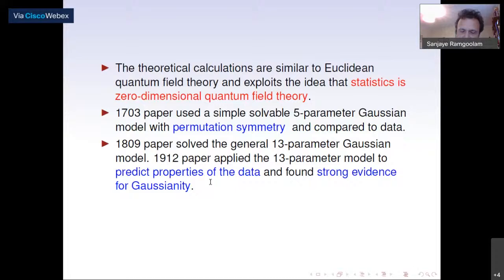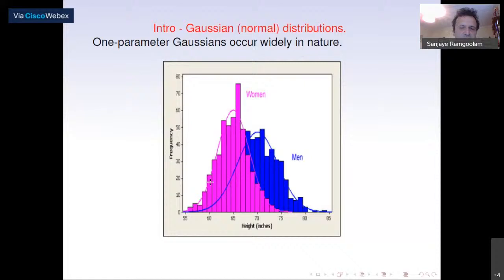Gaussians occur widely in nature. One-parameter Gaussians, for example, describe the distribution of heights of men or women. If you plot heights along the horizontal axis and draw a histogram of frequencies, you get a histogram very nicely approximated by a normal curve.